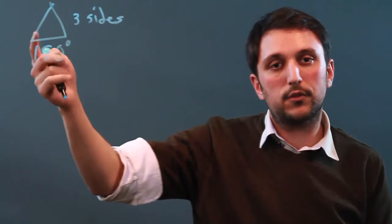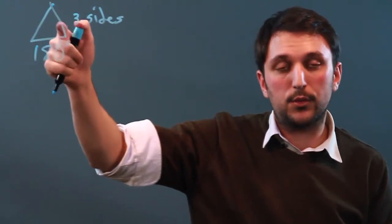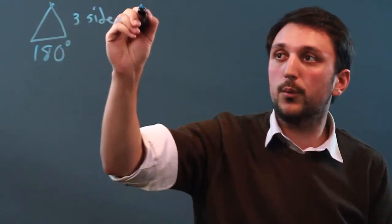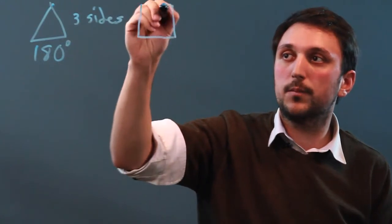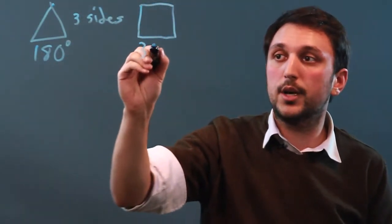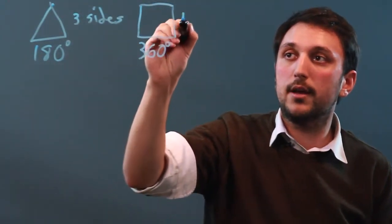The thing is, there's no such thing as a polygon with less than three sides. So next we have a rectangle, and that has 360 degrees and four sides.